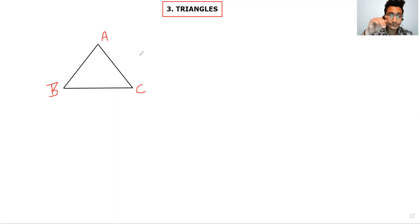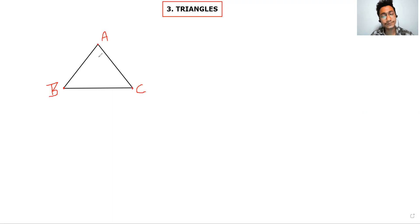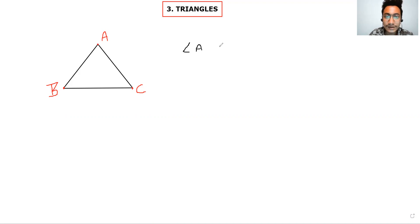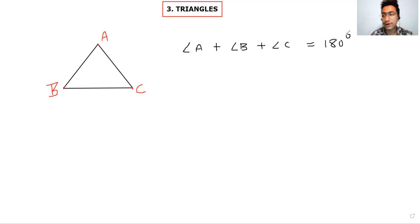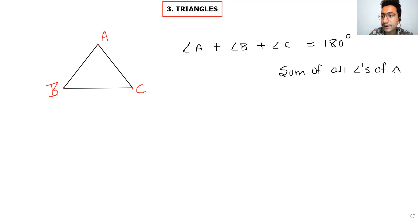In this triangle, you can see that 3 sides are formed. One is AB, another is BC, and the other is AC. Clear? And we have three angles: angle A, angle B, and angle C. So now I can say that angle A plus angle B plus angle C is equal to 180 degrees, because the sum of all angles of a triangle is 180 degrees.